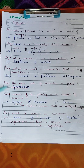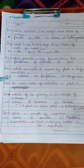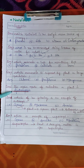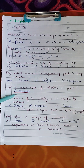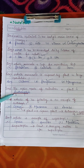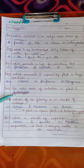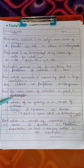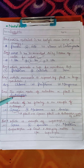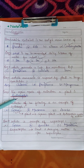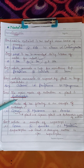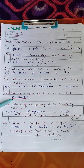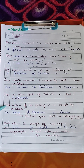Question five: the main mode of nutrition in plants is autotrophic mode. Autotrophic mode of nutrition is the mode in which green plants prepare their own food by the process of photosynthesis.